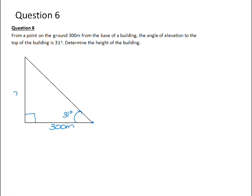Determine the height of the building. So in this case, x is the opposite side and 300 is the adjacent side. So the tan of 31, because tan is the ratio of opposite over adjacent, will be x over 300. So 300 times the tan of 31 will equal to x. And if you punch that into a calculator, you get x to be 180.26 meters.